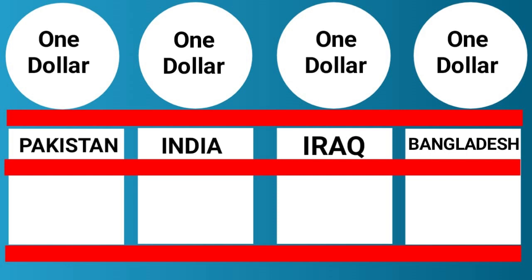Hello viewers, welcome back. 1 United States Dollar equals 291 Pakistani Rupees. 1 US Dollar is equal to 83 Indian Rupees.